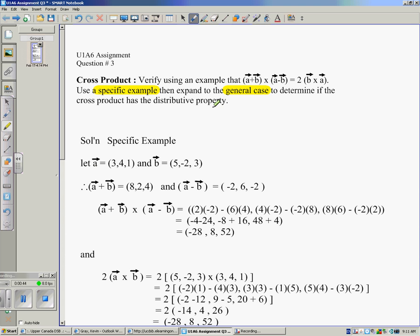A specific example is basically just picking any two vectors. In this case, I let vector A be 3, 4, 1 and vector B be 5, negative 2, 3.